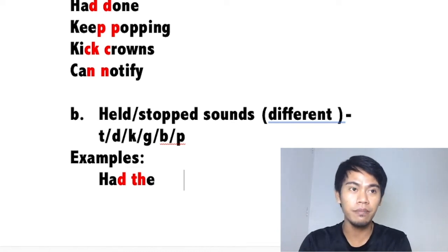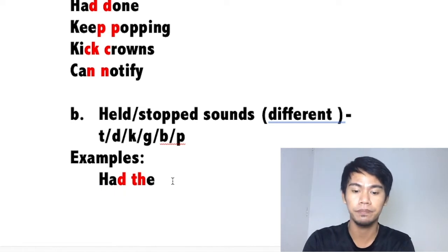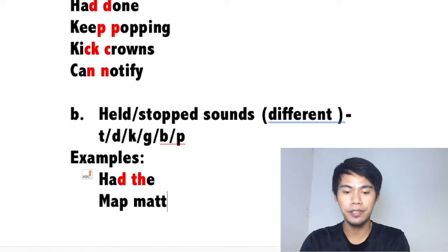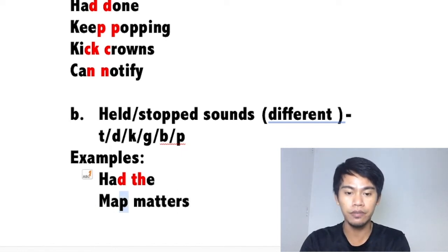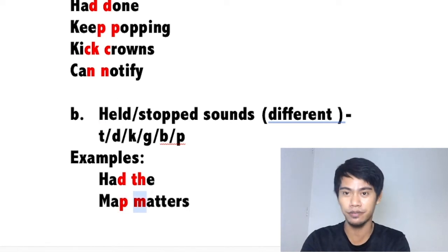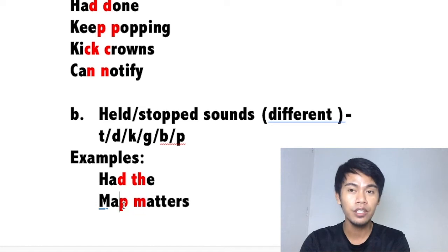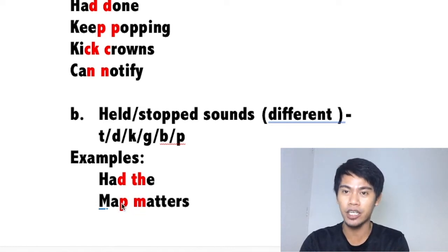Another example: 'map matters.' The last sound of 'map' is a P — consonant. The first sound of 'matters' is also a consonant. Do they have the same sound? No, they have different sounds. So we're going to do the held sound and say 'map matters.'